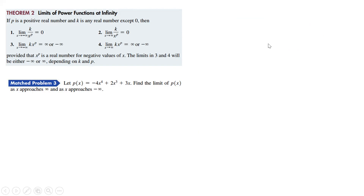Theorem two states the limit of power functions at infinity. If P is a positive real number and K is any real number except zero, then the limit as X approaches negative infinity of K over X to the P equals zero. Similarly, the limit as X approaches positive infinity of the same expression also equals zero. For multiplication instead of division, as X goes to negative or positive infinity, the result will be either positive or negative infinity, depending on your K value and your P value — whether P is even or odd, and whether K is positive or negative.